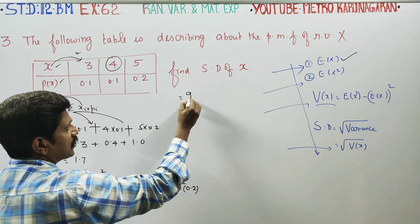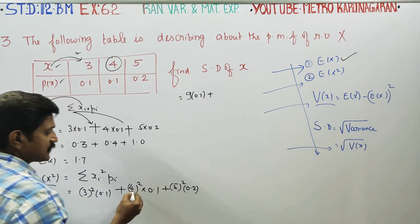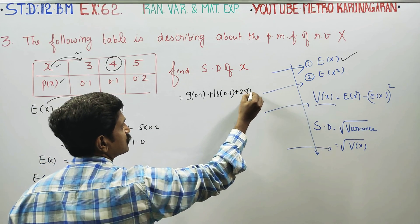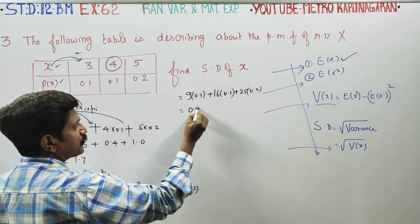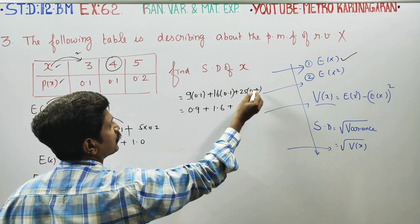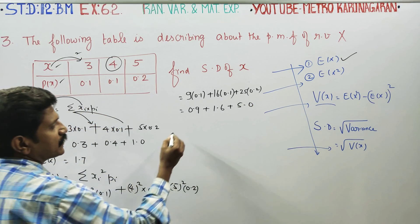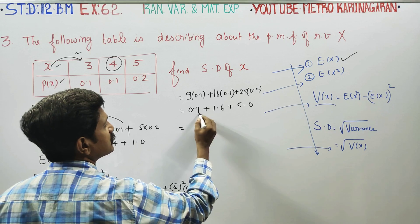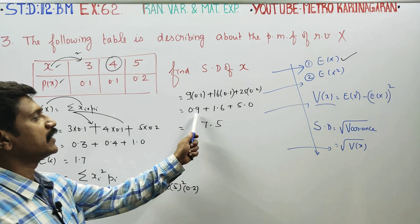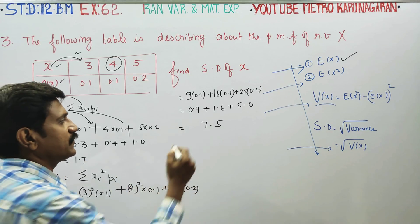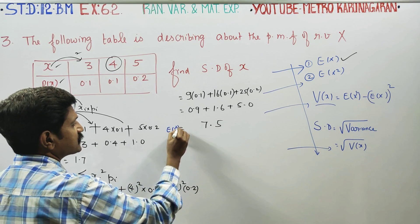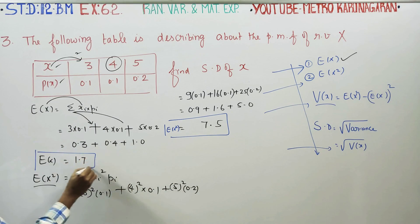Computing: 3 squared is 9, into 0.1; 4 squared is 16, into 0.1; 5 squared is 25, into 0.2. Adding: 0.9 plus 1.6 plus 5.0 equals 7.5. Expectation of X squared is 7.5.